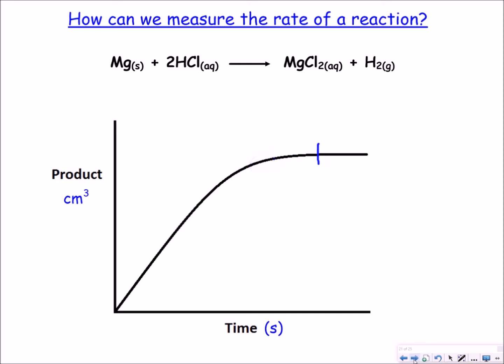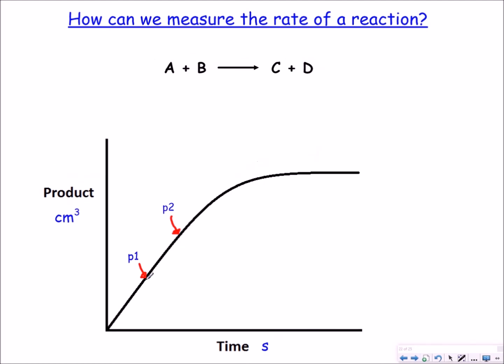Now if you were to calculate the rate of reaction from this graph you would choose two points in the graph. So here I've got 0.1 and 0.2. You'll put this into a really simple equation. So you've got 0.2 take away 0.1, divide that by the time for 0.2 which is T2, take away the time for 0.1 which is T1. Divide those two numbers together and you'll get your answer in centimeters cubed per second.